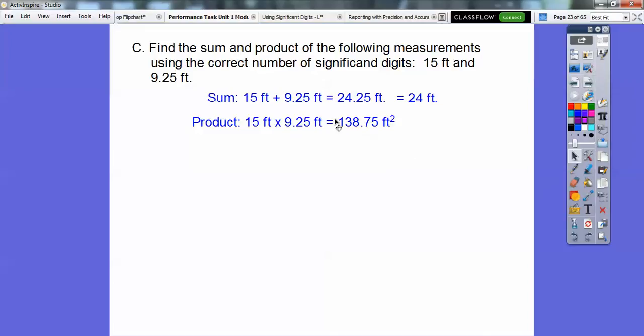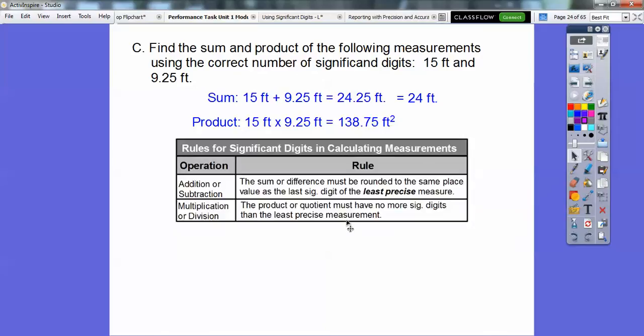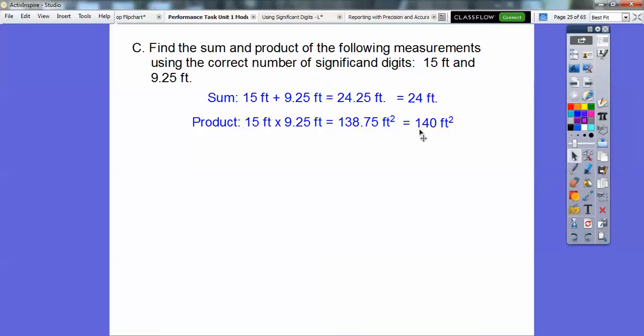The product is when we multiply that, we get 138.75. Remember, an area is probably area formula. When we multiply feet times feet, we get feet squared. So here's the rule for significant digits. The product or quotient must have no more significant digits than the least precise measurement. This is the least precise again. It has two significant digits. So we're going to round this to either 130 or 140. This one's closer to 140. So it would be 140 feet squared. See how this is two significant digits? We don't count that zero unless we have another non-zero digit after it. So this only has these two significant digits right there.